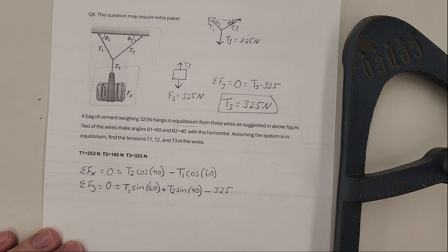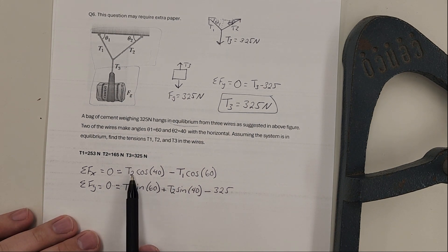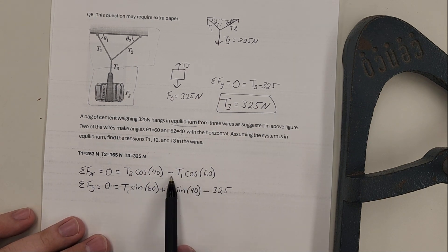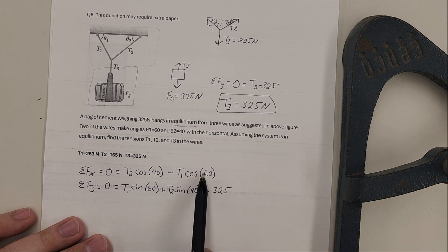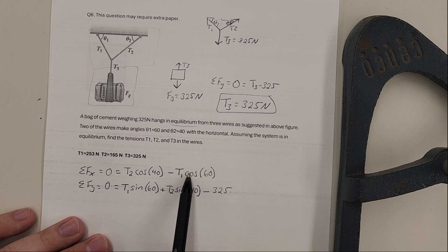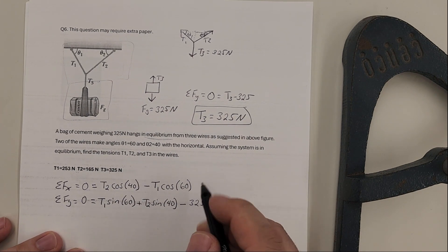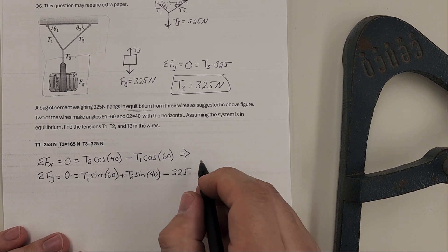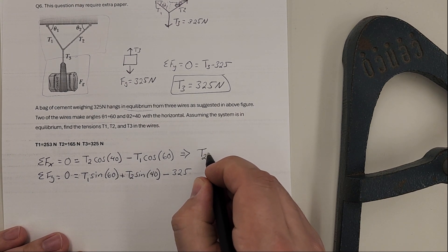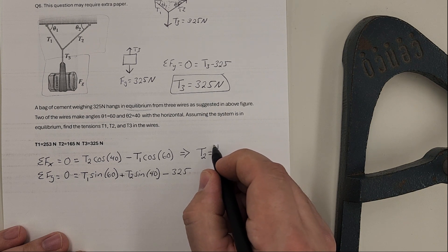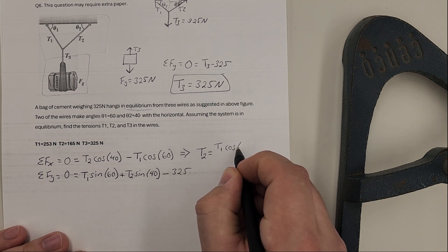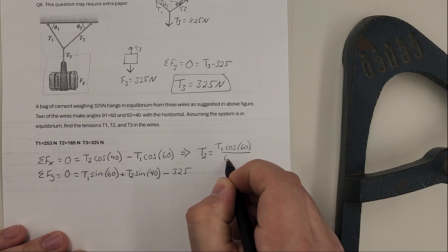I want to solve for the thing I don't care about. Let's solve for T1 first, so let's get rid of T2. I want to solve this for T2. To do that, I'm going to add T1 cosine 60 to the other side of the equation, so I'll get T1 cos 60 is equal to T2 cos 40. Then I will divide by cosine 40 to get T2 by itself.